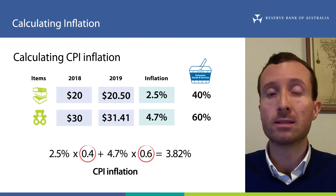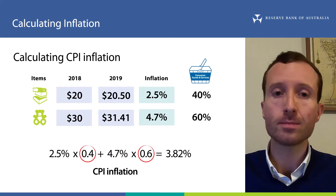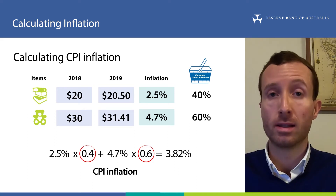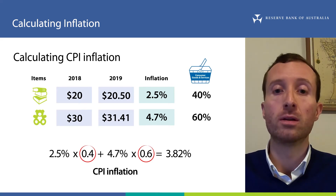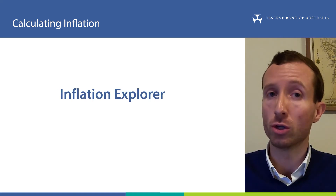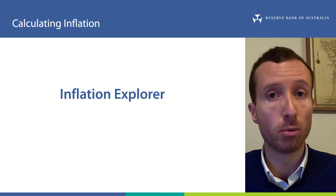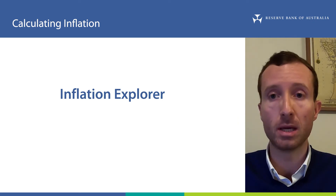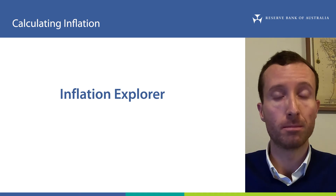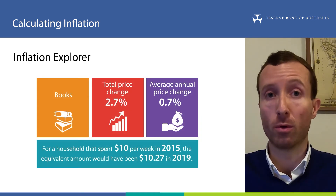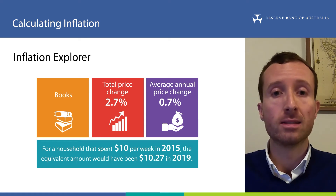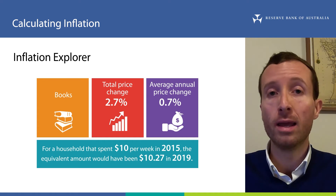Hence why the inflation rate for our economy is closer to 4.7% than 2.5%. For the Australian economy, every quarter the ABS tracks price changes for thousands of items in the basket and uses their weights to calculate CPI inflation using a similar method to the one just explained. To check how prices of goods and services across the Australian CPI basket have changed over time, there is a tool on the RBA website called the Inflation Explorer. You can use it for information on all categories in the CPI basket as well as for the basket as a whole, and it also allows you to compare price changes of multiple items against each other. For example, we can use the explorer to check what happened to prices of books in Australia between 2015 and 2019, as in the screenshot provided here. A link to the explorer is included in the description.